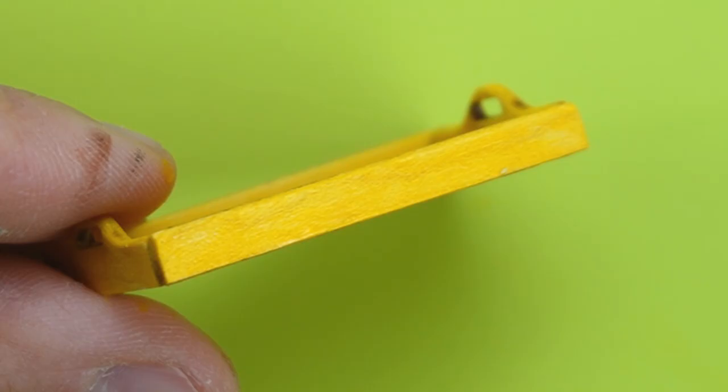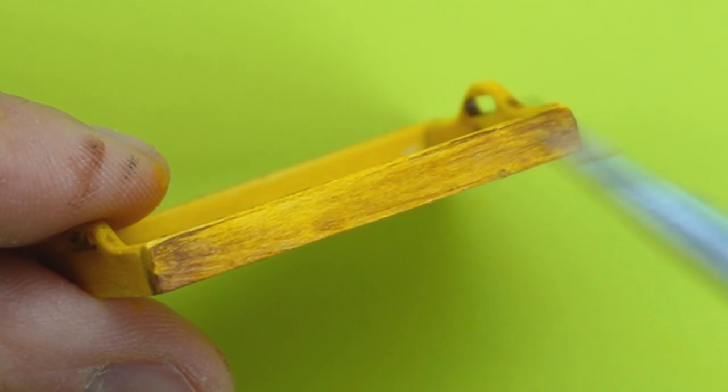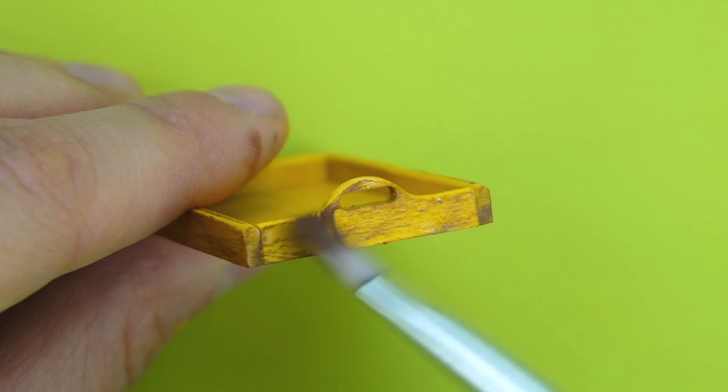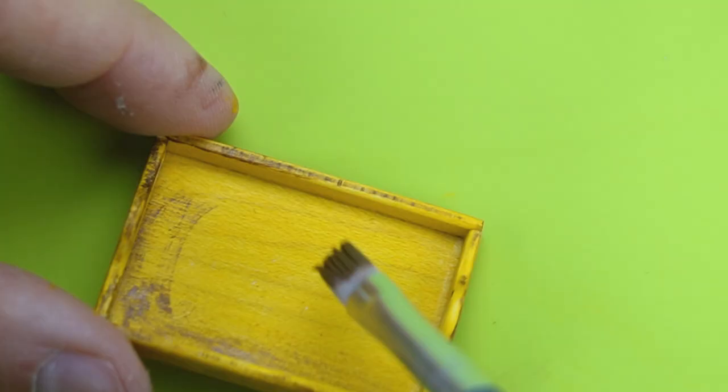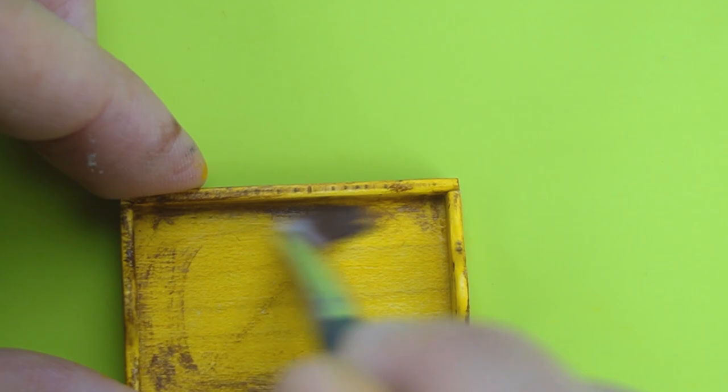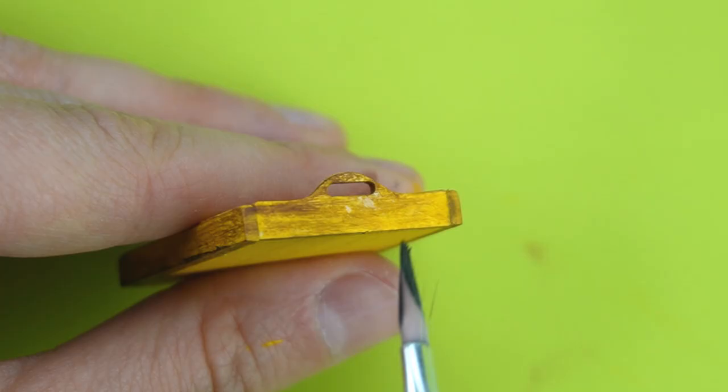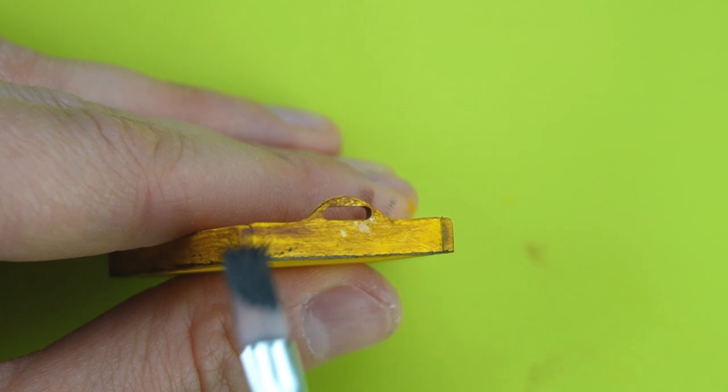While the yellow was still wet I just brushed on a little bit of brown paint to make this look older. With a really light touch I added some black acrylic paint around the outside edges and the inside corners.